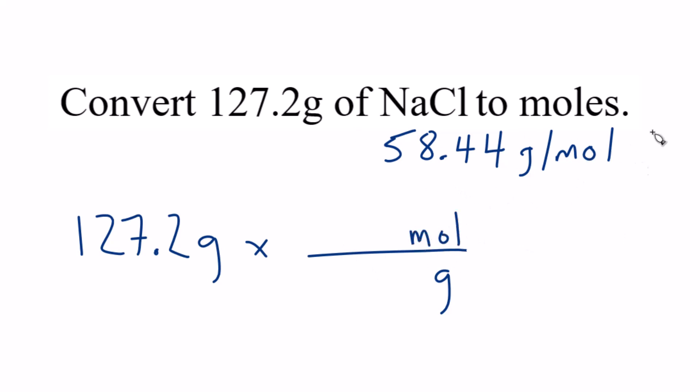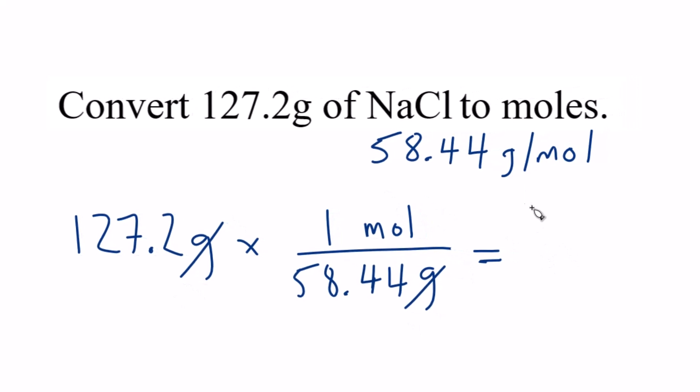And from the molar mass, we know that there are 58.44 grams of NaCl in one mole of NaCl. So now we multiply the top, divide by the bottom, grams cancel out, we're left with moles, and we get the same answer.